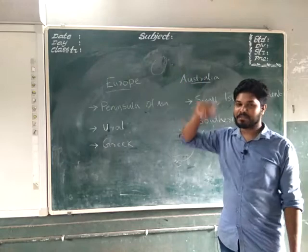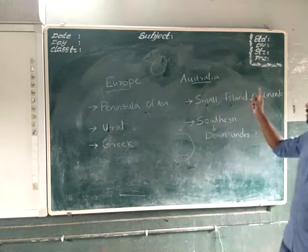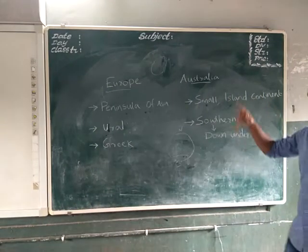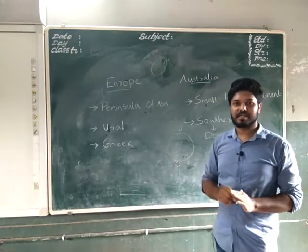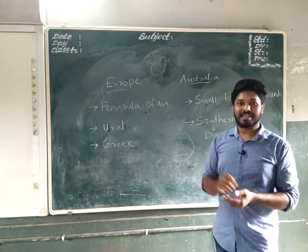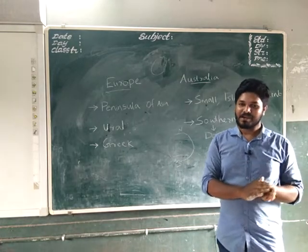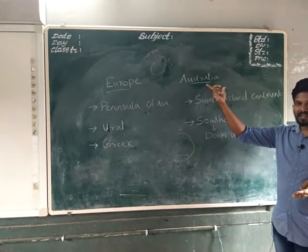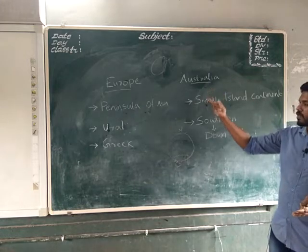Australia is an island continent — a piece of land completely surrounded by water at its boundaries. The Australian continent contains some small countries like Papua New Guinea and Timor, and the country called Australia is within the Australian continent itself.